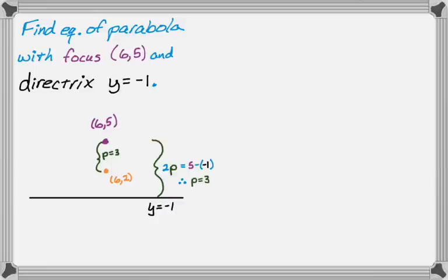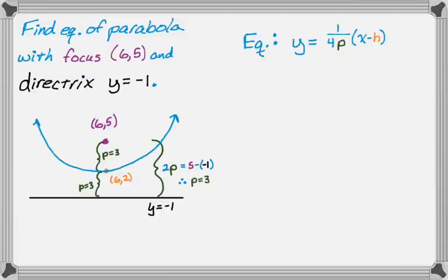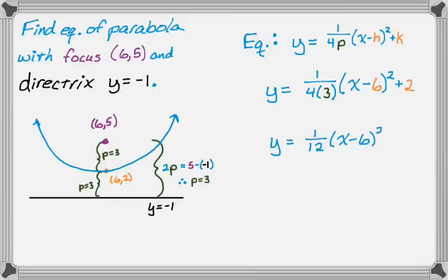I also could have started at y equals negative 1 and moved up 3. If you add 3 to negative 1, you get 2, so it doesn't matter which way you go. You can see the equality there. Let's write the equation. In general, it's 1 over 4p, quantity x minus h squared plus k. I know (h, k) is (6, 2), and p is 3, so I'm going to fill in. I have this, and just simplify that. Usually you leave these in vertex form, it's easier to work with.